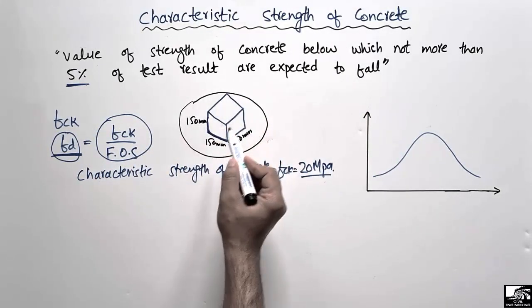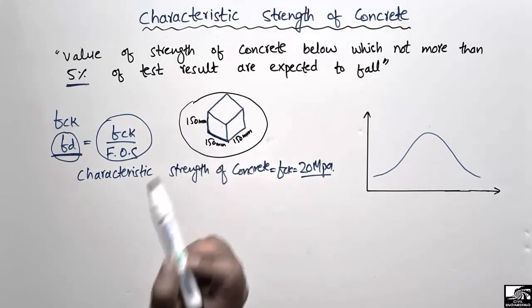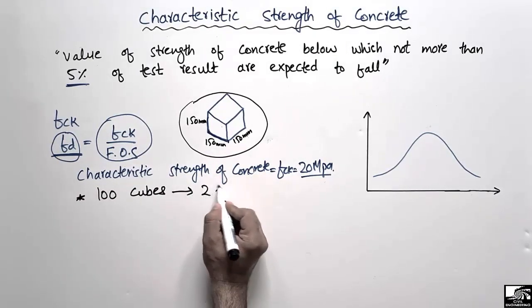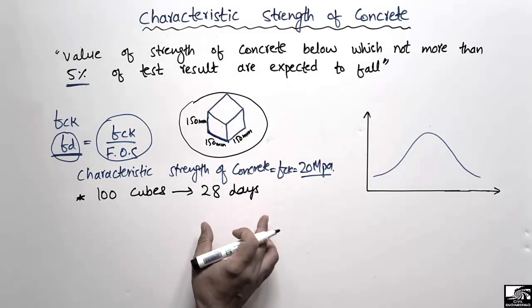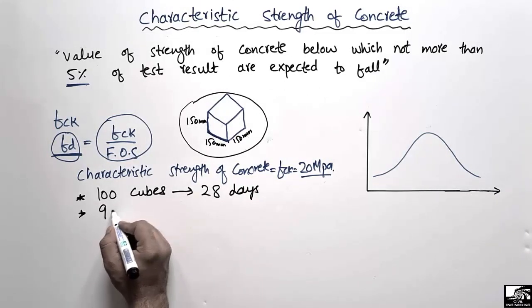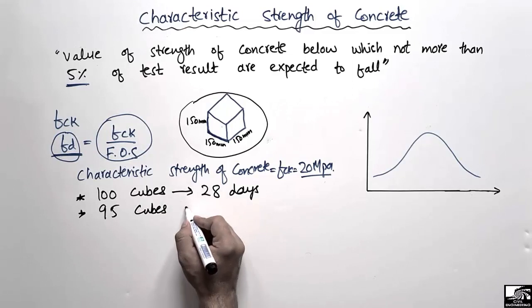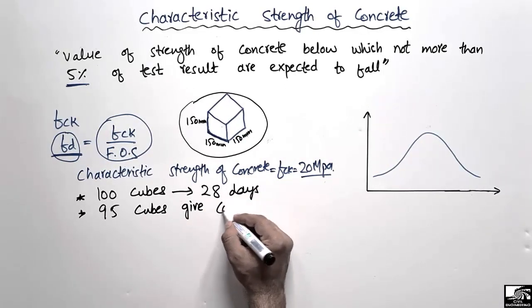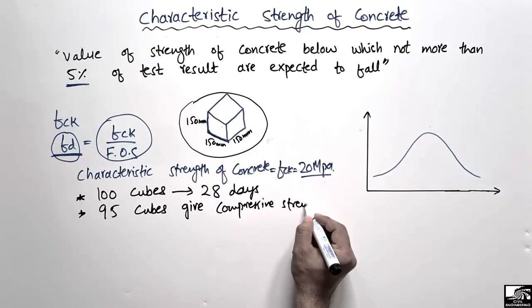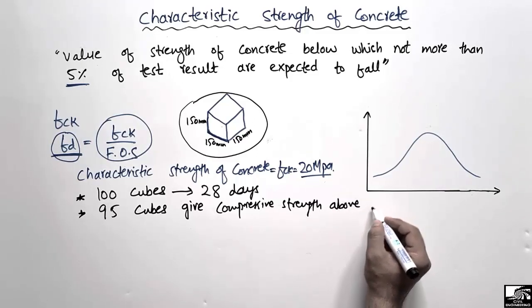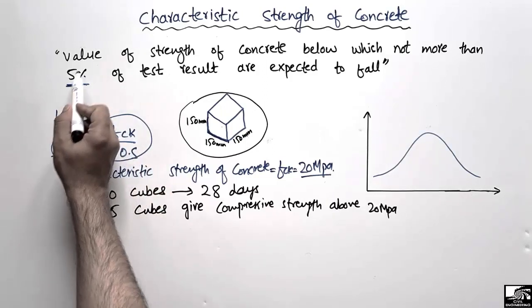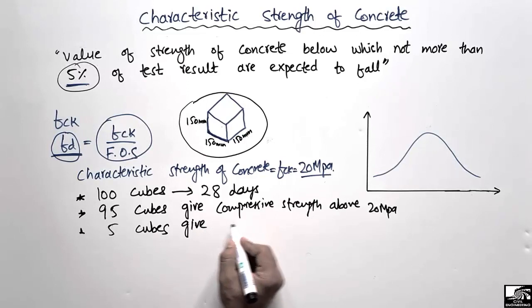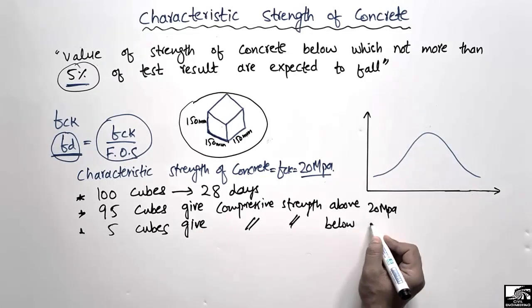Suppose we have a cube with dimensions 150 × 150 × 150 millimeters, and we make 100 such cubes. We test them after 28 days in a universal testing machine and find that 95 cubes give compressive strength above 20 megapascal, and only five cubes give compressive strength below 20 megapascal.